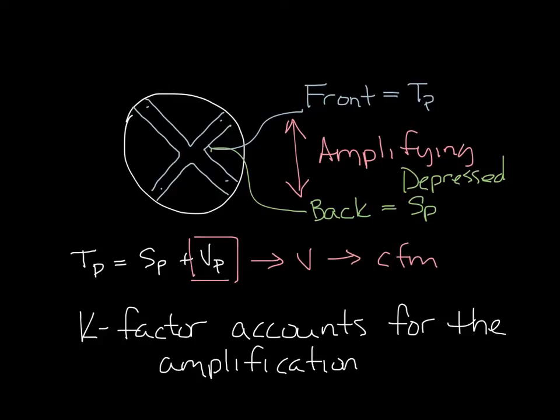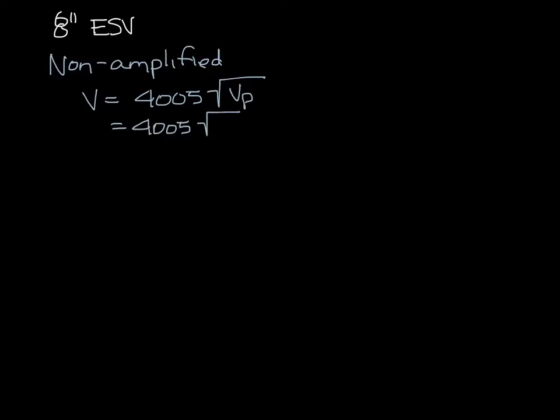Let's look at how this works and why it's a good thing. Let's say you have an 8-inch ESV. Let's calculate the lowest CFM the pressure transducer can read from a non-amplified signal and from an amplified one. First, the non-amplified signal. We know that the pressure transducer wants 0.03 inches, so let's convert that to a velocity. Velocity is equal to 4005 times the square root of the velocity pressure. So that's 4005 times the square root of 0.03, and that equals 693 feet per minute.